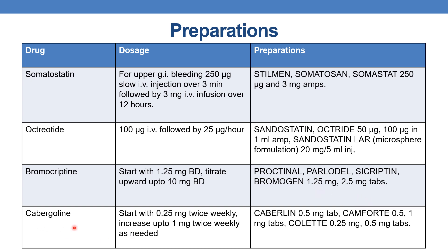The next drug is cabergoline. Start with 0.25 mg twice weekly, increase up to 1 mg twice weekly as needed. Preparations are Cabergoline 0.5 mg tablet, Cab Forte 0.5 and 1 mg tablet, and Galite 0.25 mg and 0.5 mg tablets.